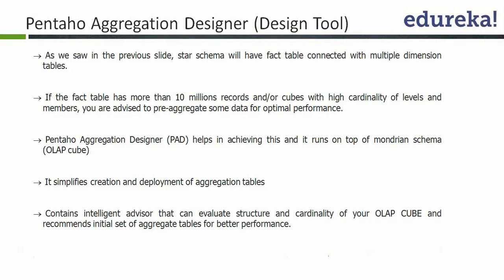As we've seen in a star schema, we have a fact table connected with multiple dimension tables. Visualize the fact table at the center, and on its periphery — the four corners — we have four dimensions. So in a star schema, the fact table is connected with four different dimensions.